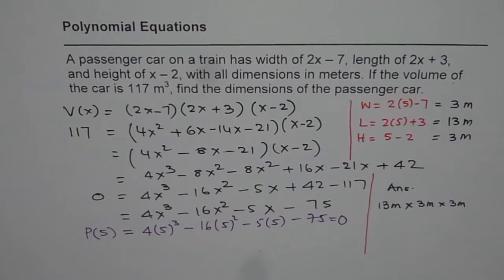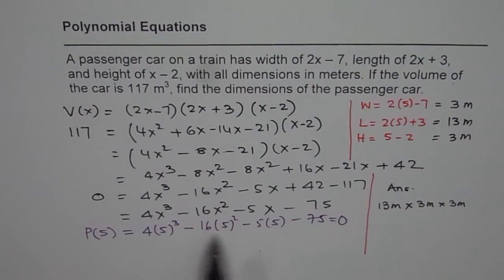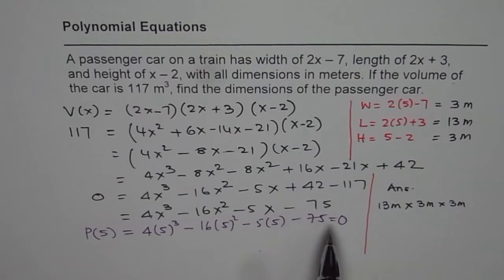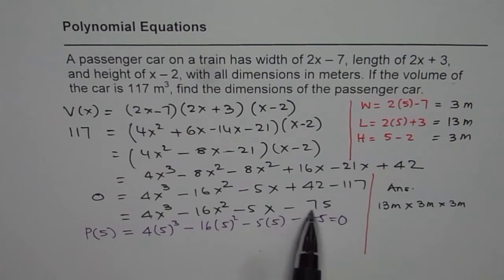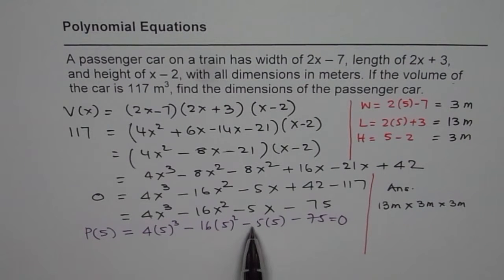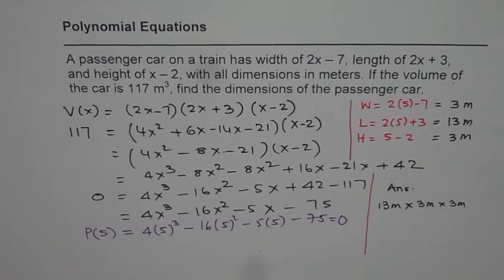When you find that x equals 5 is one of the solutions, it is also a good idea to divide the polynomial by (x minus 5) to get a quadratic equation and check if there are other possible solutions. I hope that helps. Thank you and all the best.